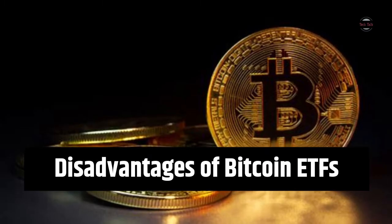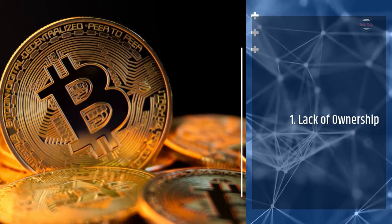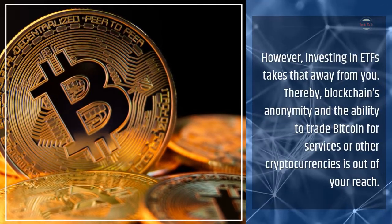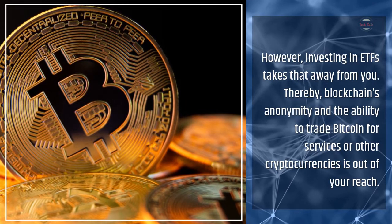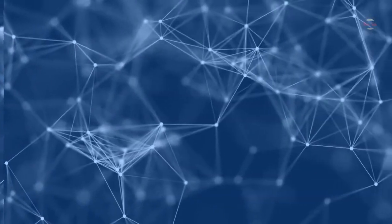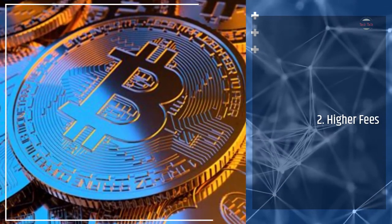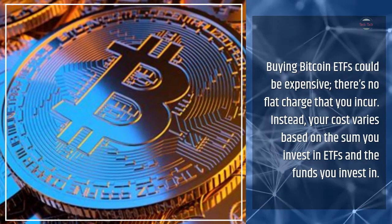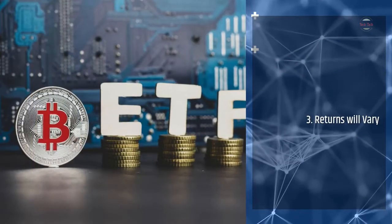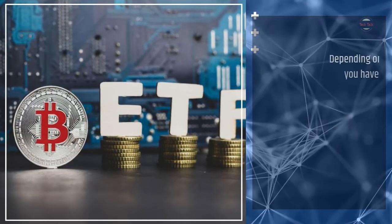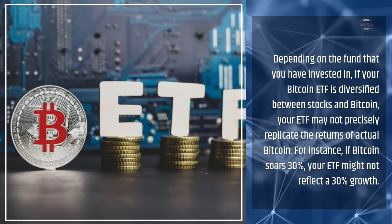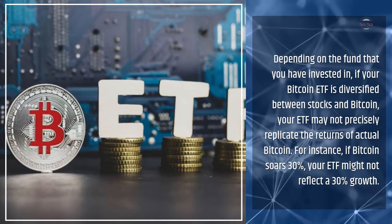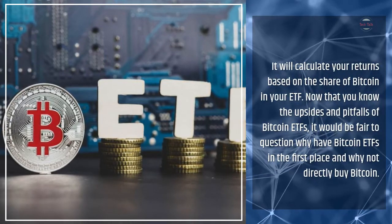Disadvantages of Bitcoin ETFs. First, lack of ownership. By being independent of third parties, Bitcoin is centered around being in charge of your own money. However, investing in ETFs takes that away from you — blockchain's anonymity and the ability to trade Bitcoin for services or other cryptocurrencies is out of your reach. Second, higher fees. Buying Bitcoin ETFs could be expensive; there's no flat charge — your cost varies based on the sum you invest and the fund you choose. Third, returns will vary. Depending on the fund you have invested in, if your Bitcoin ETF is diversified between stocks and Bitcoin, your ETF may not precisely replicate the returns of actual Bitcoin. For instance, if Bitcoin soars 30%, your ETF might not reflect a 30% growth — it will calculate your returns based on the share of Bitcoin in your ETF.